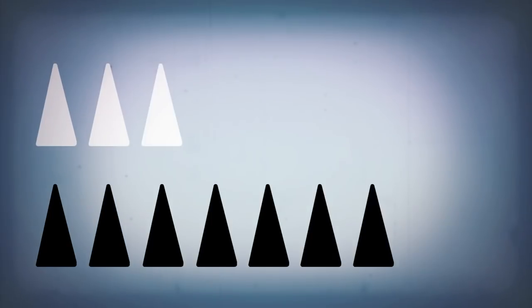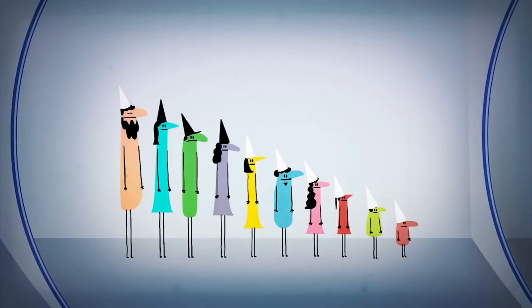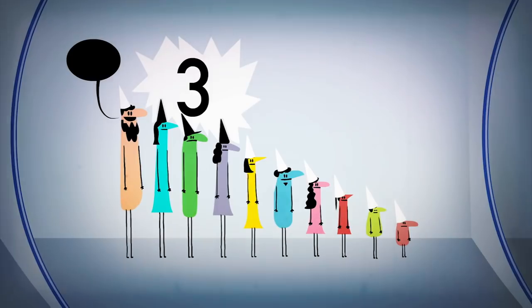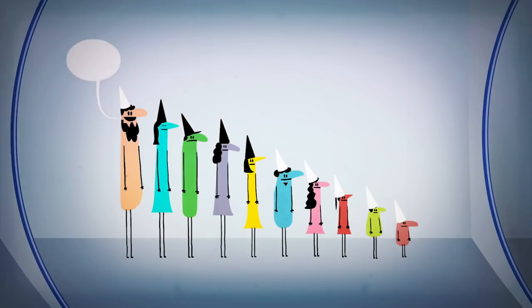It can't be the total number of black or white hats. There are more than two possible values. But what does have two possible values is that number's parity. That is, whether it's odd or even. So the solution is to agree that whoever goes first will, for example, say black if he sees an odd number of black hats, and white if he sees an even number of black hats.